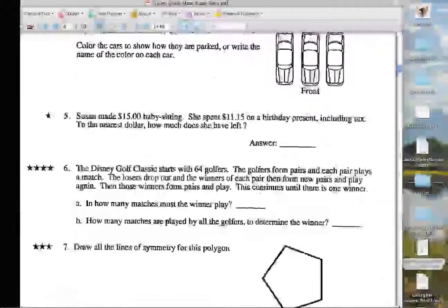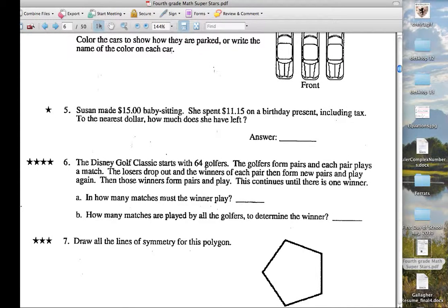Now the next question. The Disney Golf Classic starts with 64 golfers. The golfers form pairs and each pair plays a match. The losers drop out and the winners of each pair then form new pairs and play again. Then those winners form pairs and play. This continues until there is just one winner.